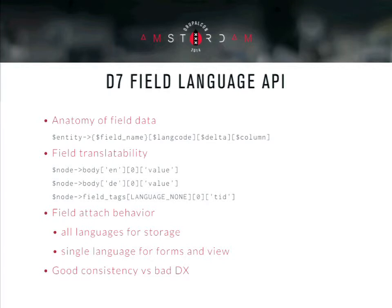What we implemented in the field API to deal with language: we actually took two different approaches depending on the context. When we have to work with storage, we act on all languages — we are able to load and store all available field translations at once. Instead, when working with forms or rendering entities, we are dealing with the language at the time. All this architecture provides good consistency because, exactly as cardinality and delta values, language is always there and is predictable — but it provides very bad DX for the reason I just explained.